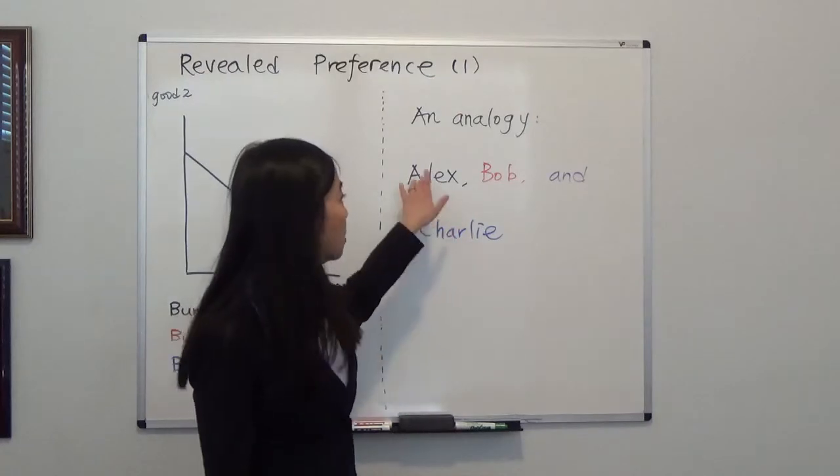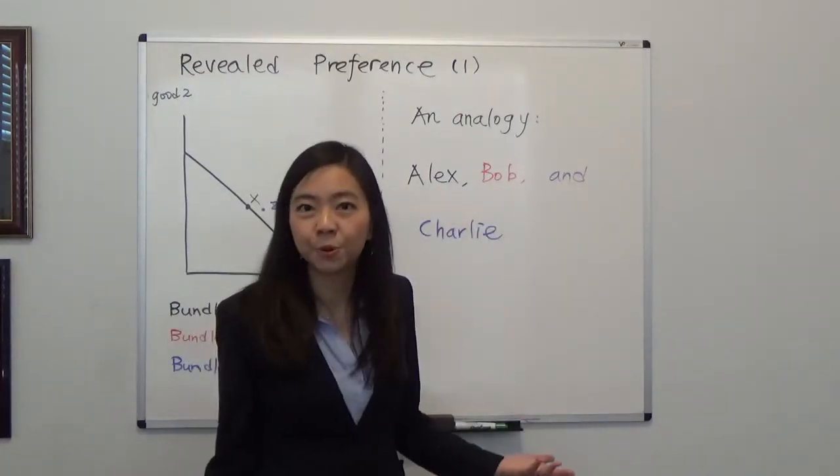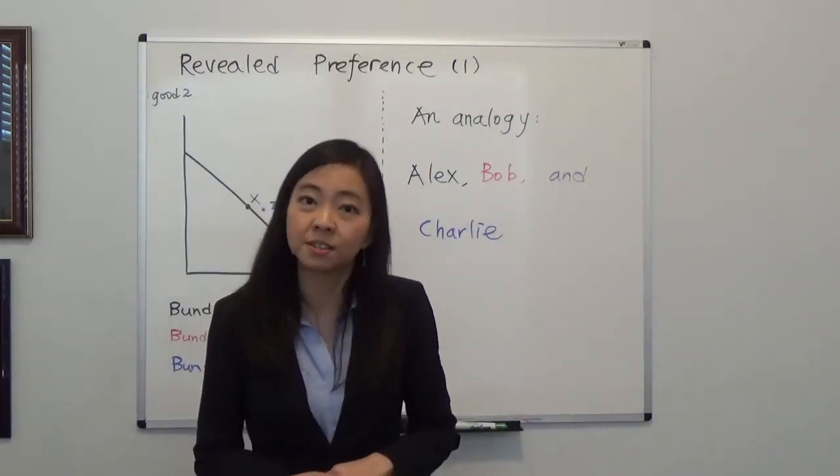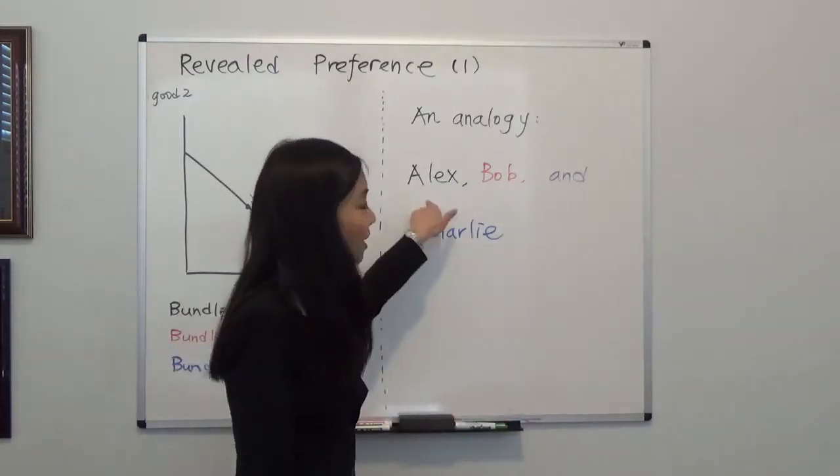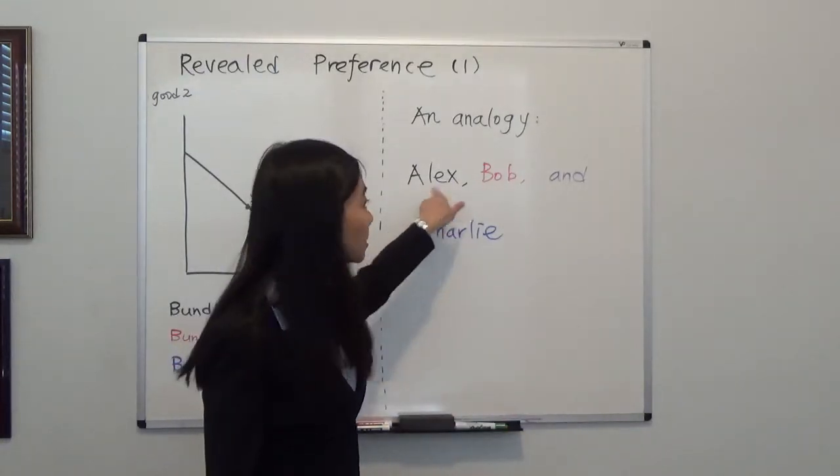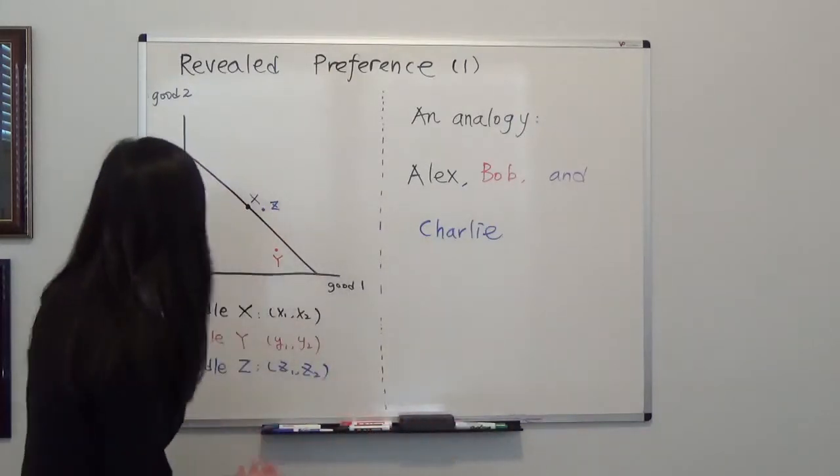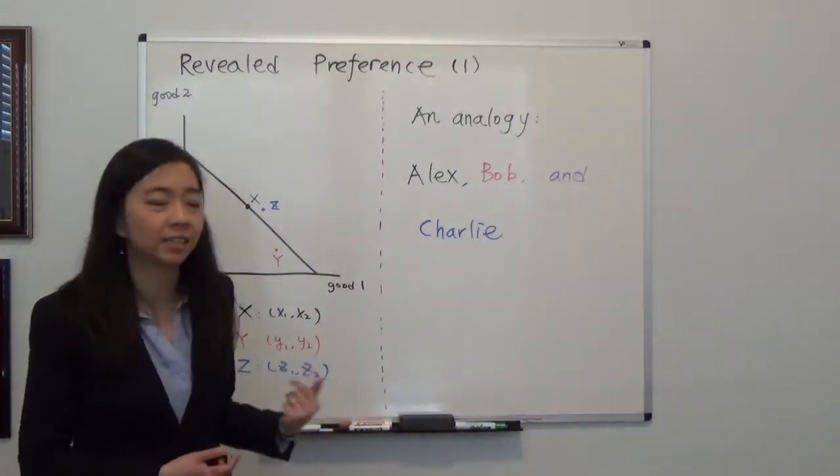However, we know both Alex and Bob were available. They both wanted to go out with you, but you ended up choosing Alex. That means you prefer Alex to Bob. Now let's go back to our example in the textbook.